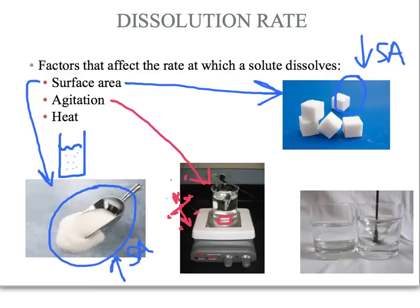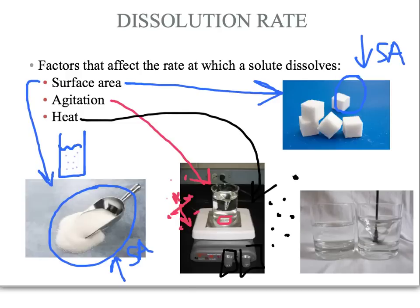The last factor we're going to talk about at this point is heat. This picture is another example of that — we've got a heat function and a stirring function. As we increase heat, that also increases the energy or the movement of the particles involved in the solution. As those particles move more frequently, you are increasing the number of collisions, and increasing the number of collisions leads to an increased rate of dissolving.